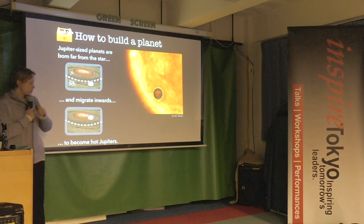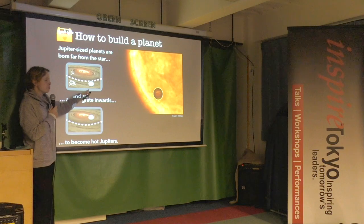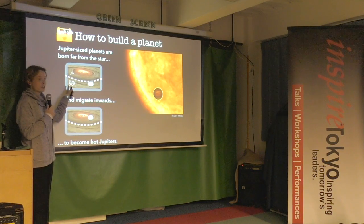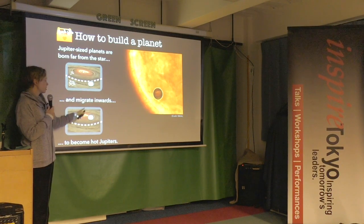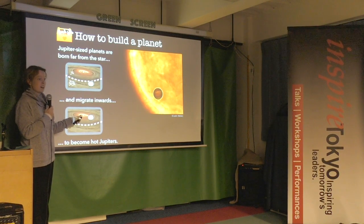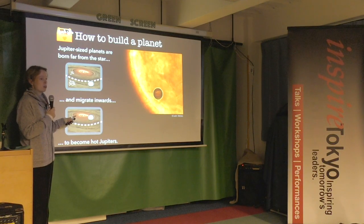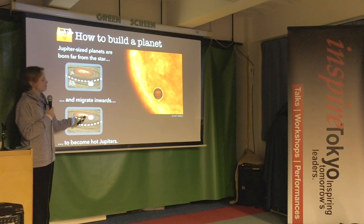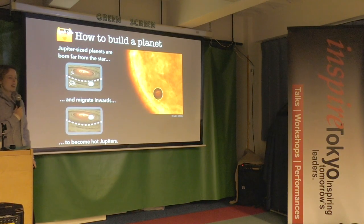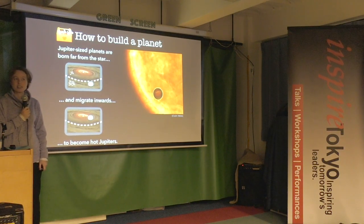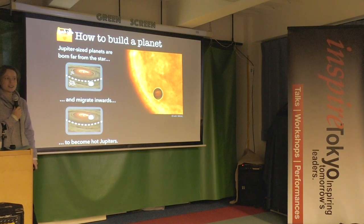Interestingly, if this Jupiter formed far out it would have had a lot of ice inside it, and because it's been crushed to such high pressures that ice can survive the heat of the star. But if the ice wasn't inside a planet and was just in smaller rocks, it would simply evaporate. If it's safely inside a planet, you can have hot ice.